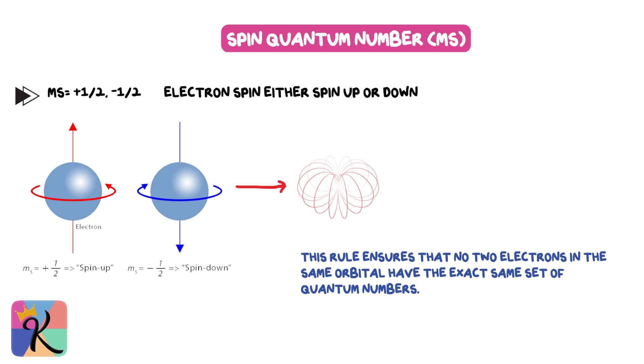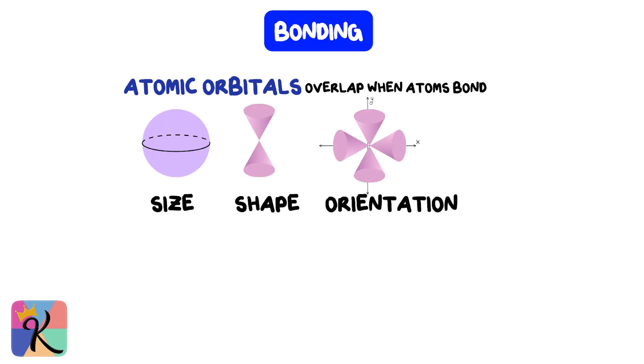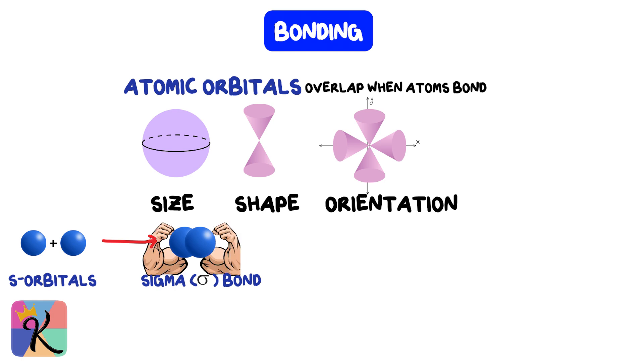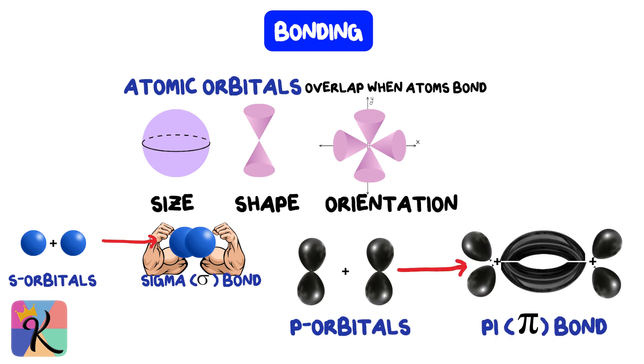Now that we've covered quantum numbers, let's tie this back to bonding. Atomic orbitals overlap when atoms bond. The way these orbitals overlap depends on their shapes and orientations. For example, s orbitals overlap to form sigma bonds, which are strong and stable. Meanwhile, p orbitals overlap side to side to form pi bonds, which are weaker than sigma bonds, but crucial in forming double and triple bonds.